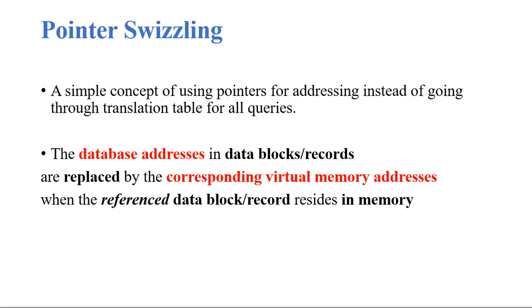Pointer Swizzling is a simple concept of using in-memory pointers instead of database addresses to eliminate going to the translation table for all the queries. These pointers are similar to the pointers we use in programming languages like C.